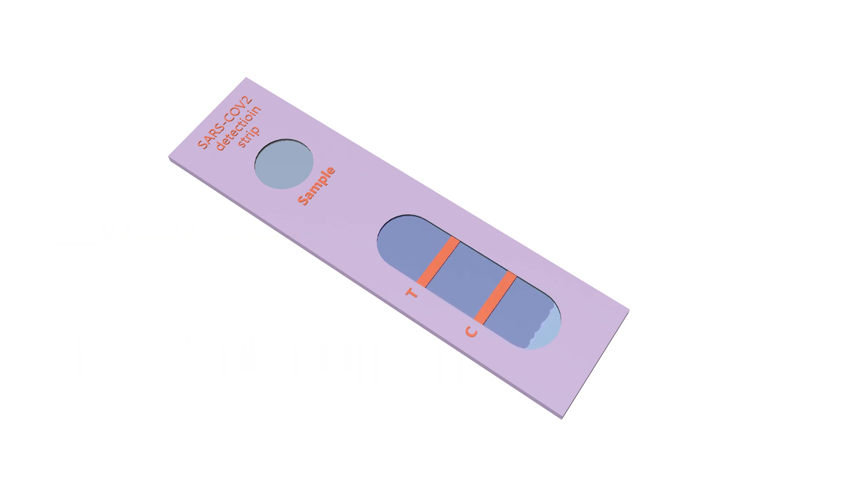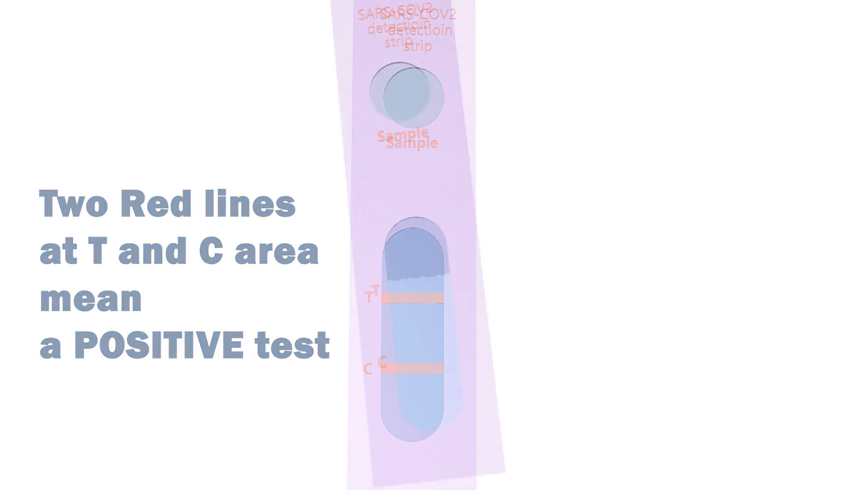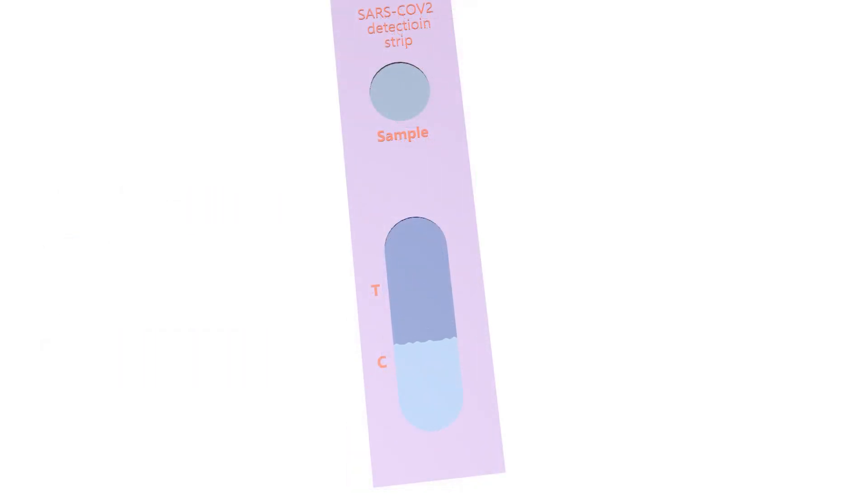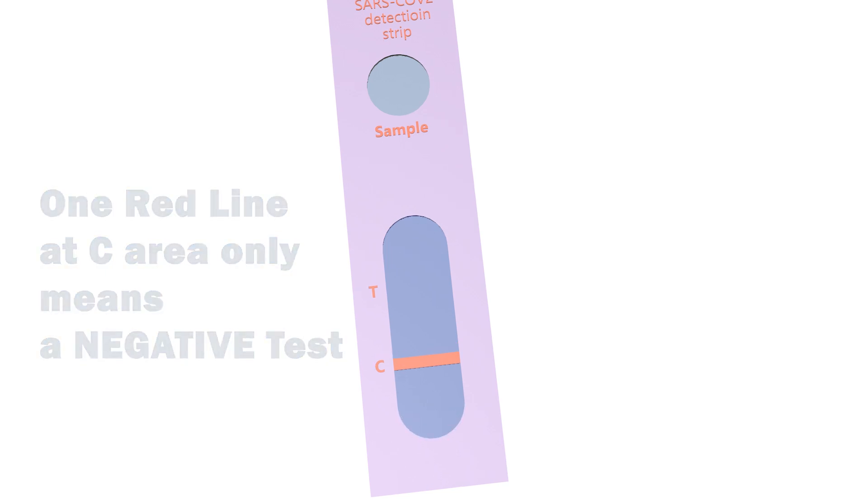Two red lines will be generated at the T and C areas as the result of a positive test. A sample from an infected person will show two red lines. In contrast, a sample from an uninfected person will show only one red line in the control area, not in the test area.